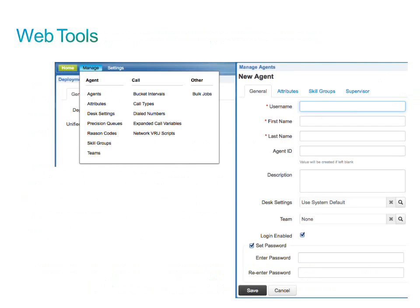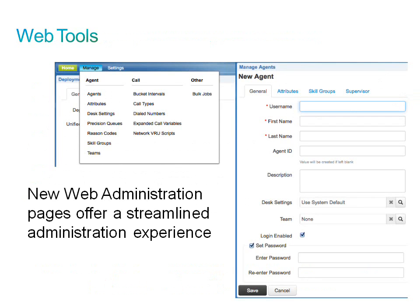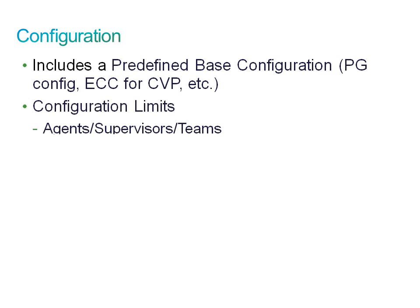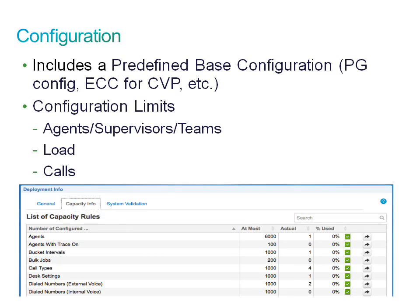New to Package CCE 9.0 is the streamlined web-based administration tool. This administration interface was created to make the configuration process much simpler and reduce the effort required to configure the system. Since this is a bounded solution, many parameters are preset, which reduces the number of parameters the administrator must configure. Package CCE comes with predefined base configuration for things such as peripheral gateways and expanded call context for CVP. There are also predefined limits to the number of objects that can be configured as well as how many can be active at any given time.